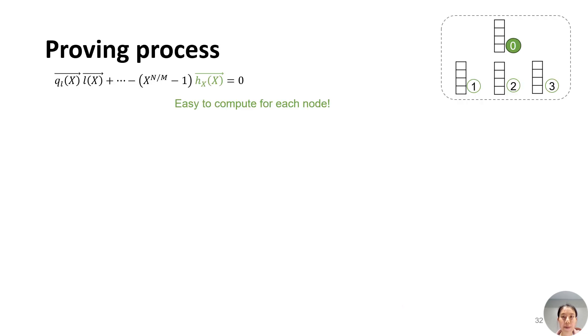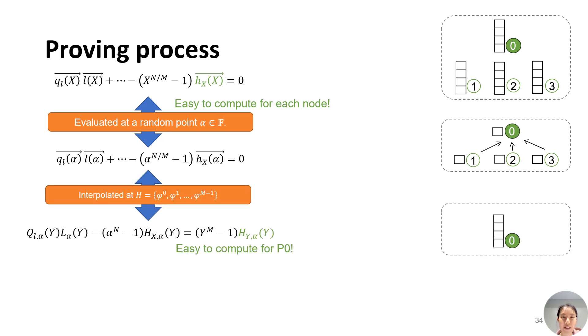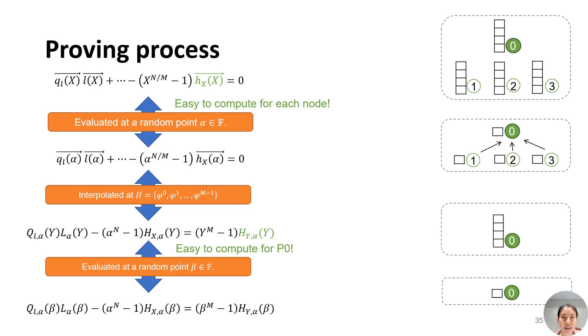To make it clear how the nodes behave in our protocol, we illustrate the proving process as follows. First, each node holds its own polynomial for each participant in the identity. Second, the prover cluster receives a random point alpha from the verifier, and each node evaluates its polynomials at this point. Third, each node sends its evaluations to the master node, which constructs a new polynomial identity through the vector of the evaluations. Finally, the prover cluster receives another randomness from the verifier and evaluates the new polynomial identity at this point, allowing the verifier to verify the identity of the evaluations.